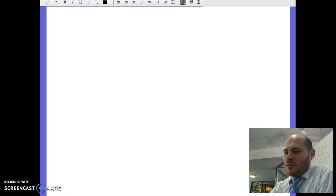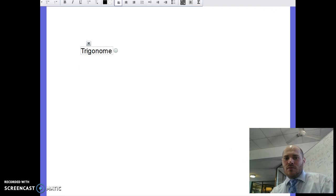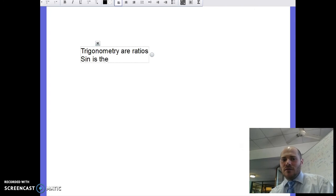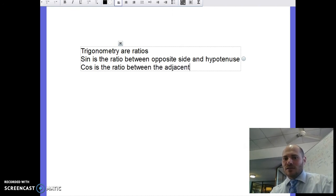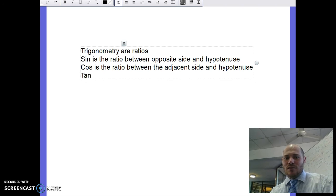So effectively, in summary, trigonometry are ratios. Sine is the ratio between opposite side and hypotenuse. Cos is the ratio between the adjacent side and the hypotenuse. And tan is the ratio between the opposite side and the adjacent side.